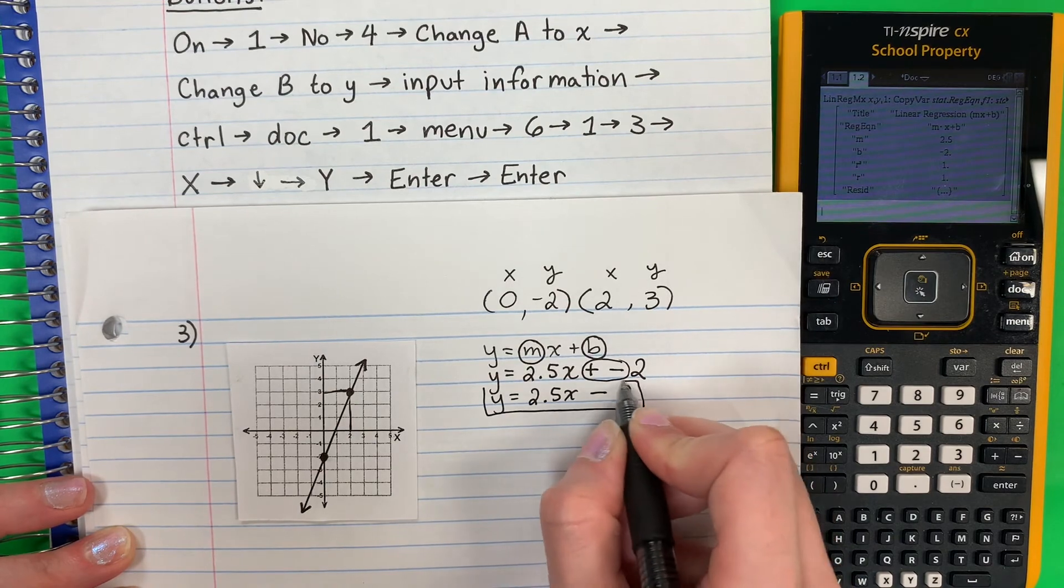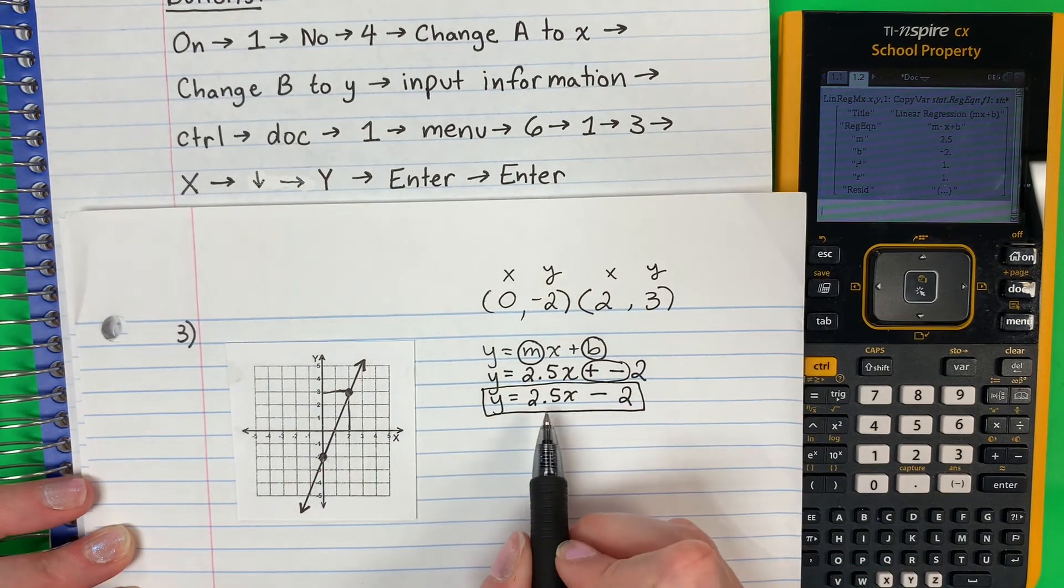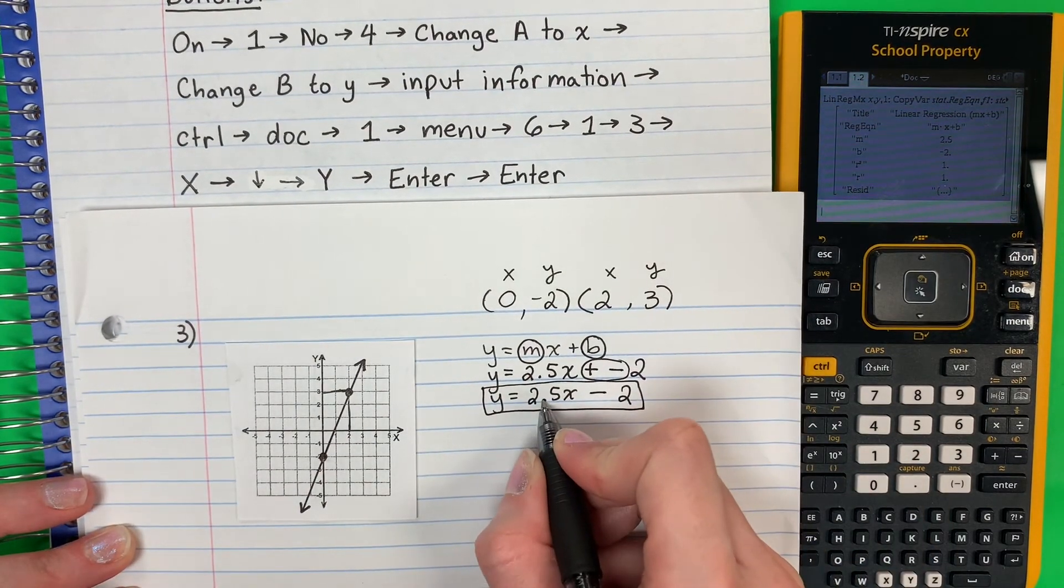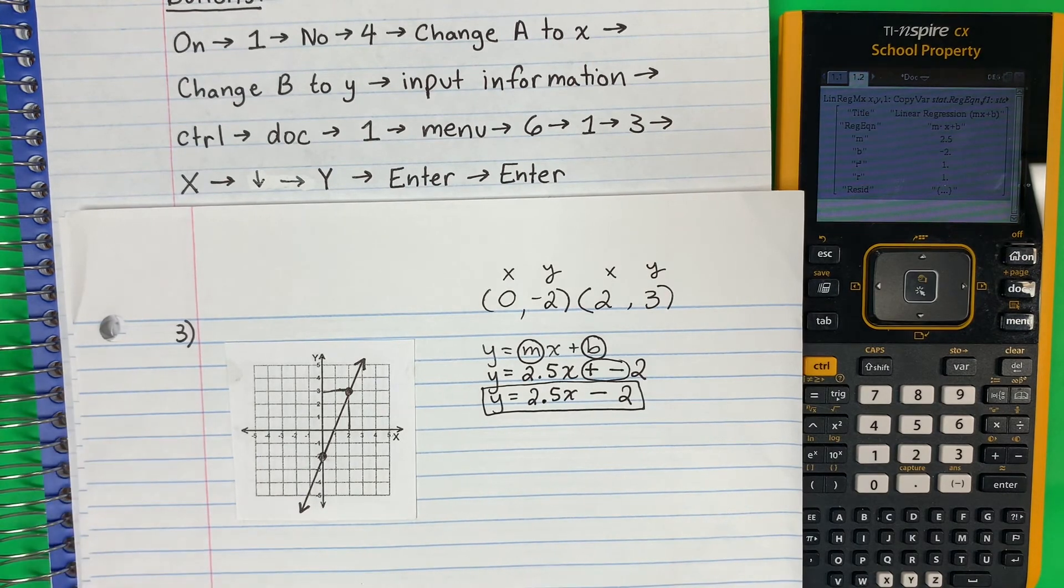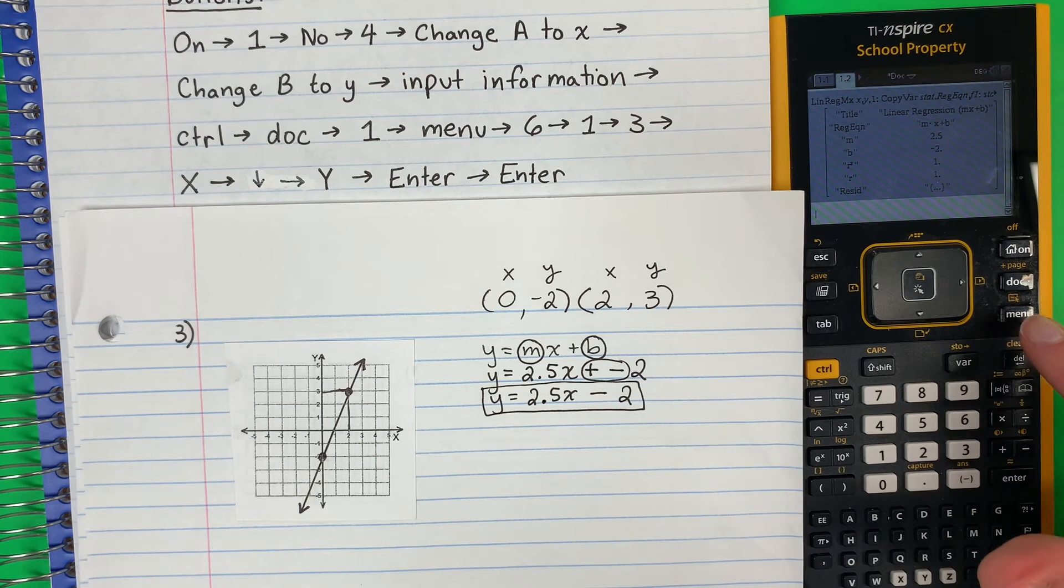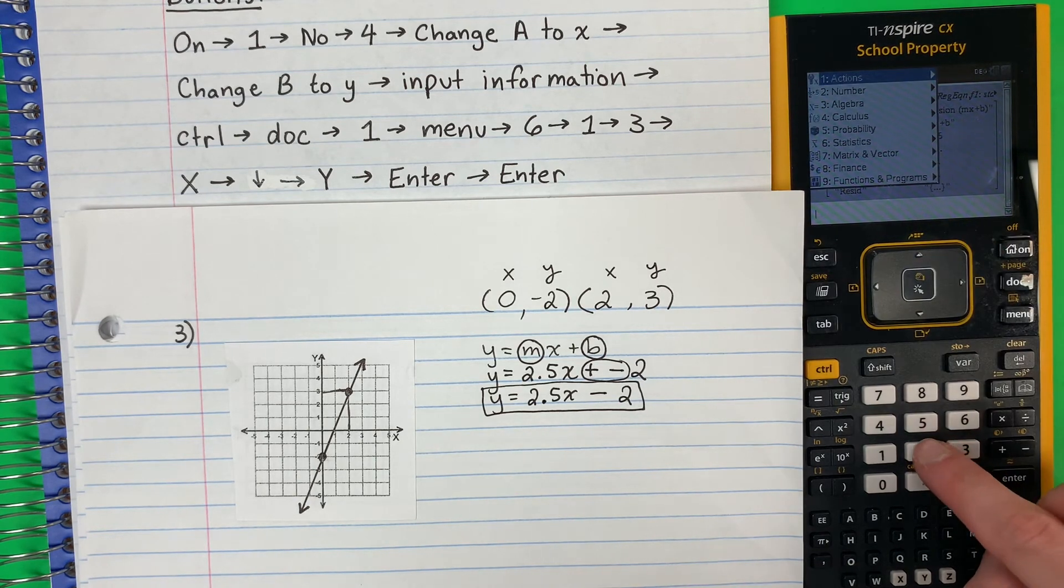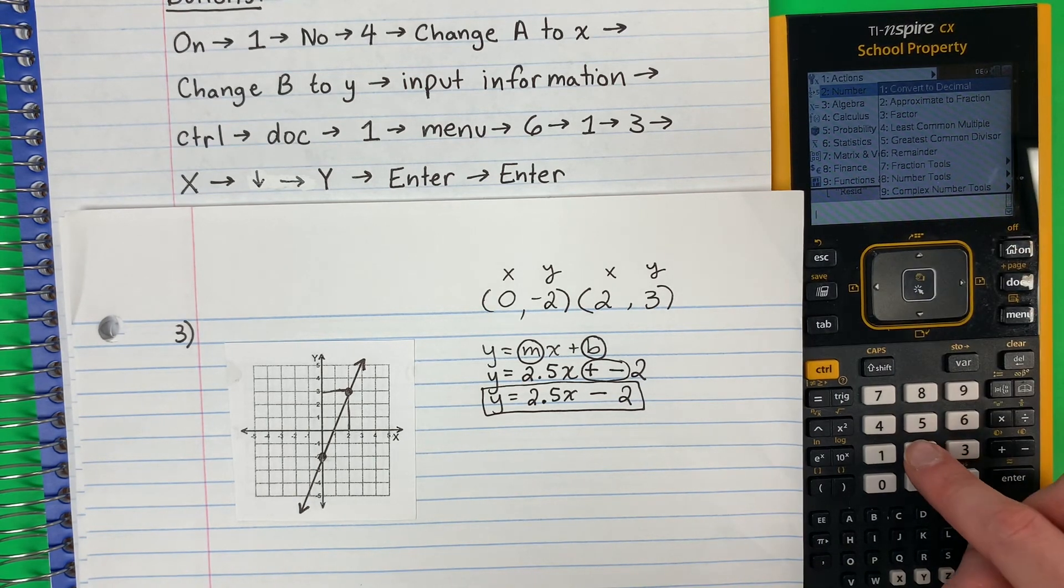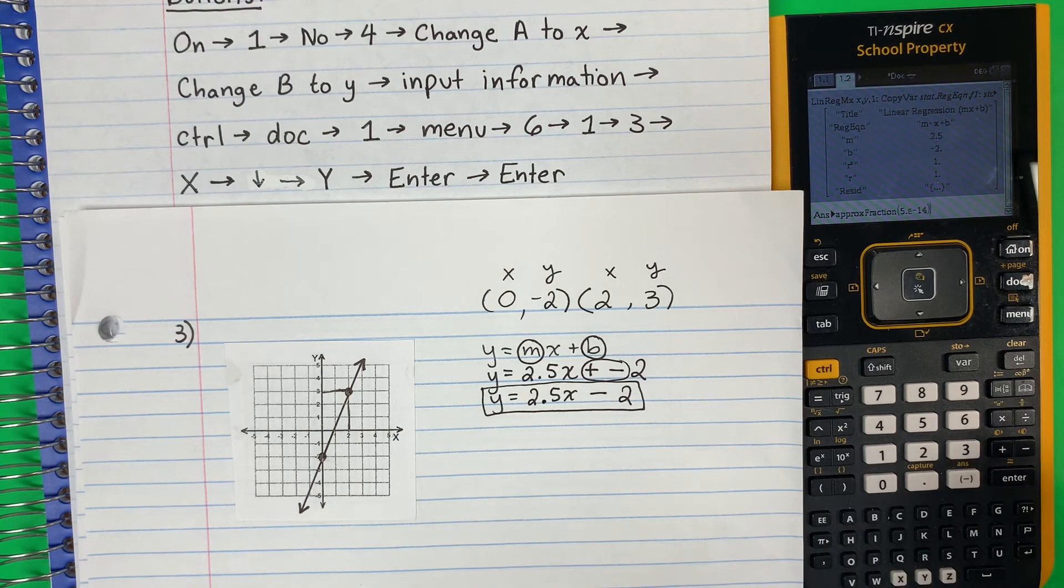This is your answer as a decimal. Esta es la respuesta como decimal. With the point. Con el punto. If I want fraction, si quiero fracción, let's change it. Vamos a cambiarlo. So, menu, 2, fraction 2. So menu, 2, 2. Enter. Here it is as a fraction.